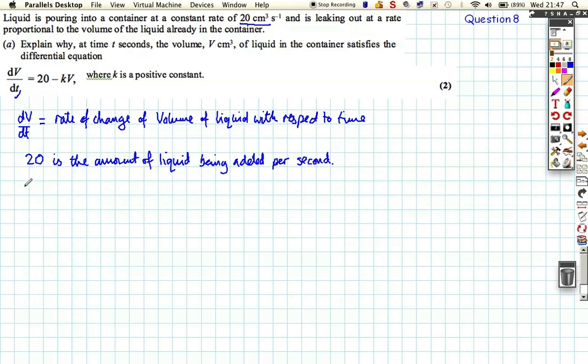And then we've got the minus kV. Minus kV is the amount of leaking liquid, so it's the amount that's coming out. k is the constant of proportionality. And the negative means that it's a decreasing amount. So kV means that the amount leaking out is proportional to the volume, and it's minus kV because it means that amount is decreasing because it's leaking out. Just a little bit of explanation is needed for that.